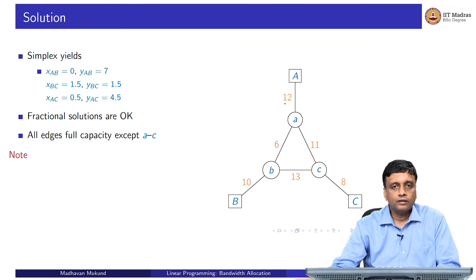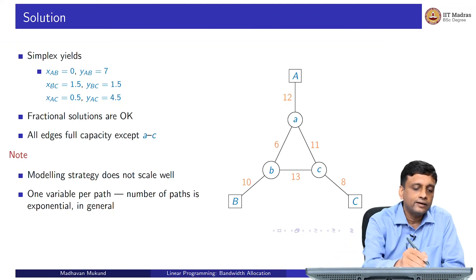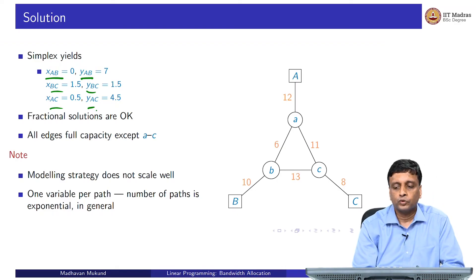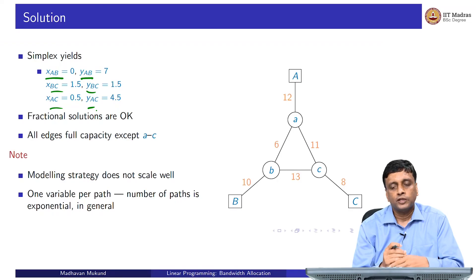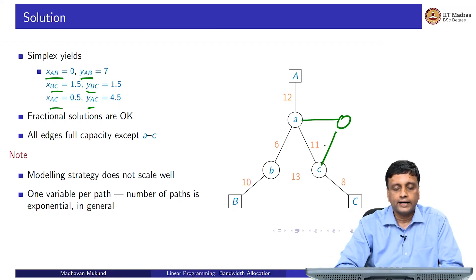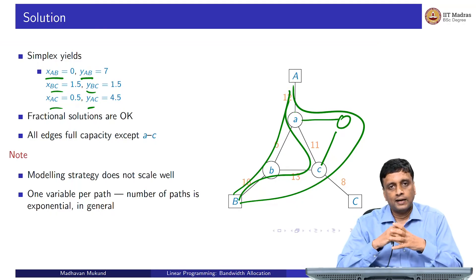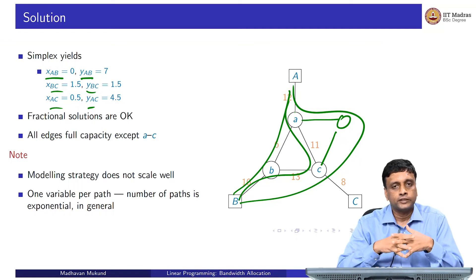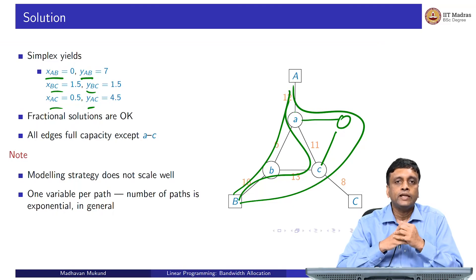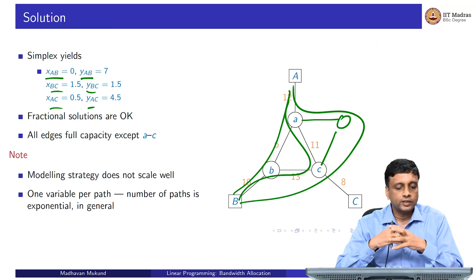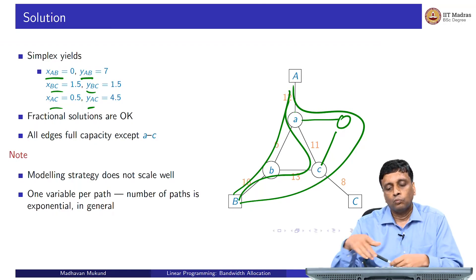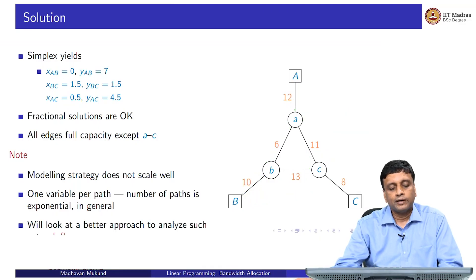The problem with setting up this problem as a linear program is that it does not scale well. The reason is that we created one variable for every possible route between two nodes. In this triangular network there were only two possible routes per pair, but with more nodes there would be exponentially more routes. In general, the number of paths in a graph — where you do not repeat a vertex — is exponential. So a linear program with one variable per path would be very large compared to the graph it started from. This is not a good strategy to model such problems.